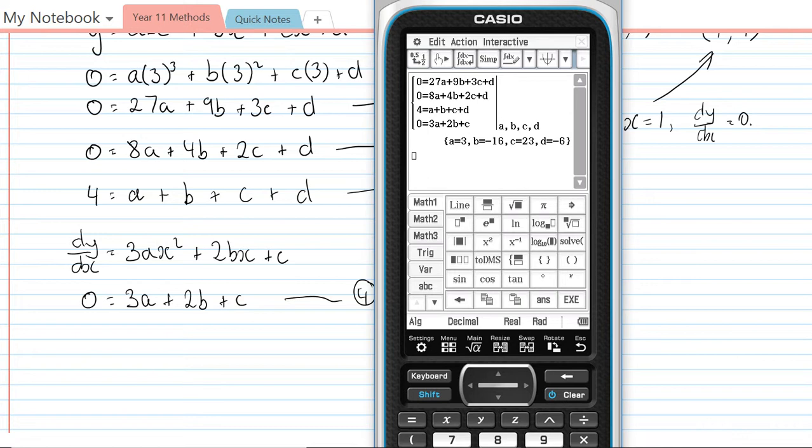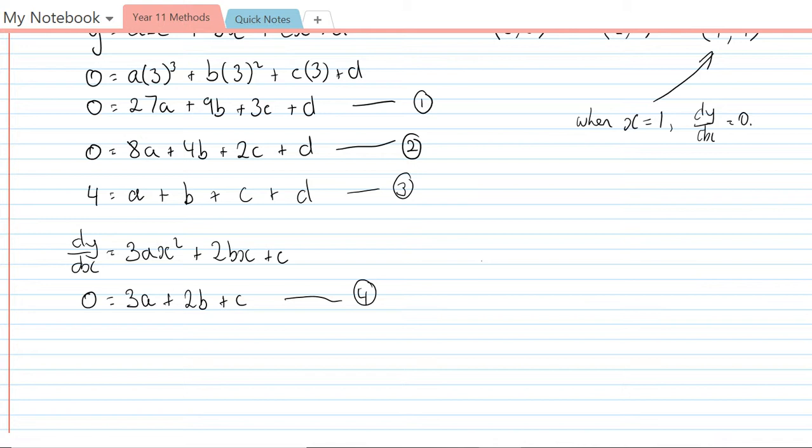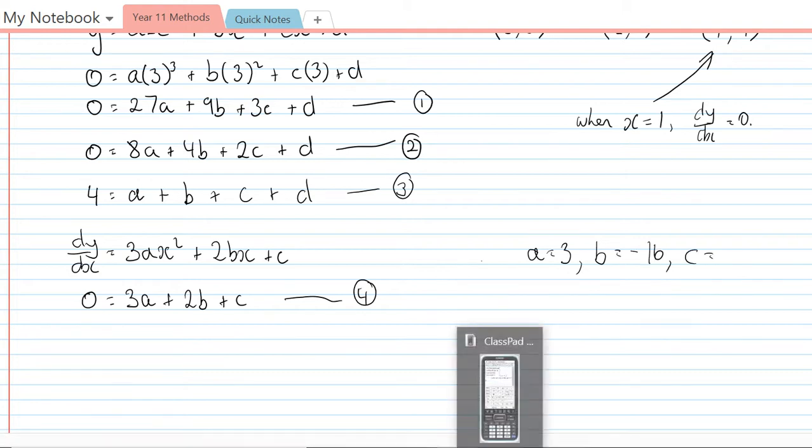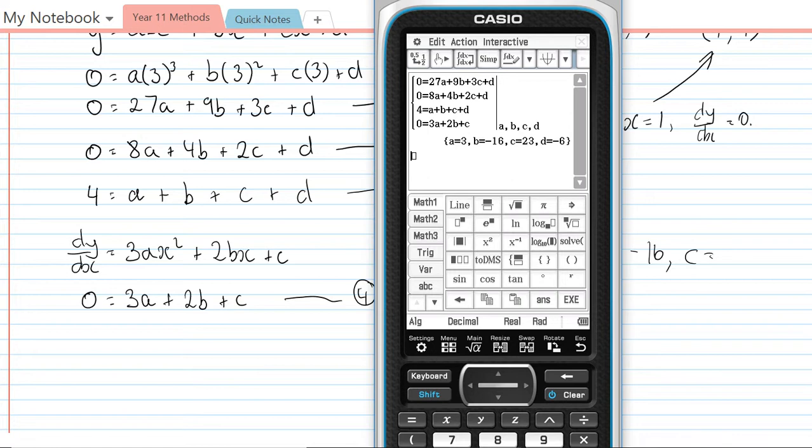And so that tells me that a equals 3, b equals negative 16, c equals 23, and d equals negative 6. So we get a = 3, b = -16, c = 23, and d = -6.